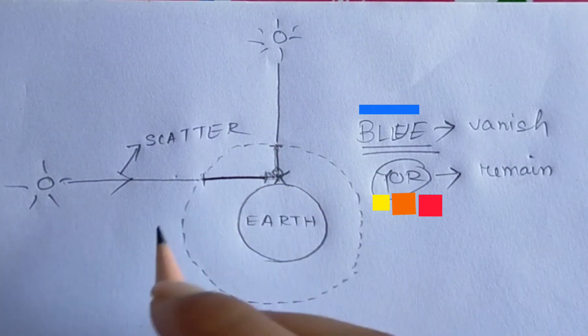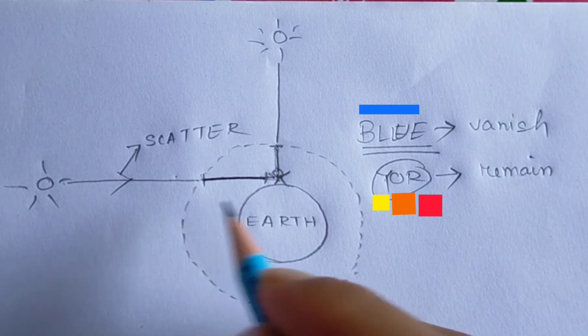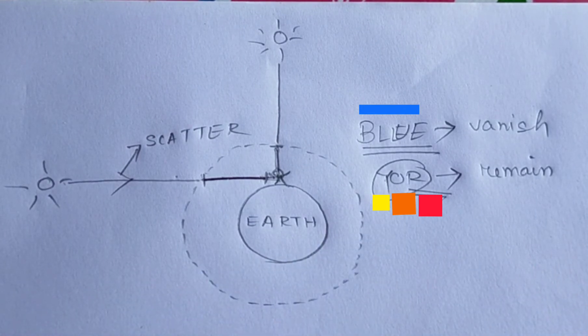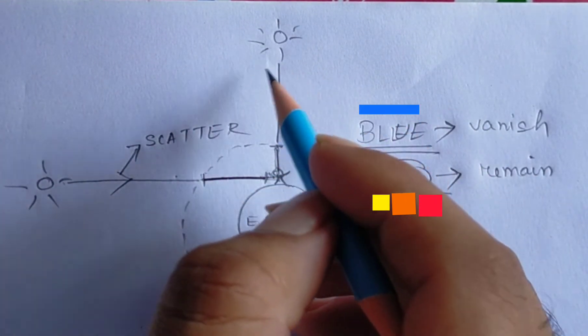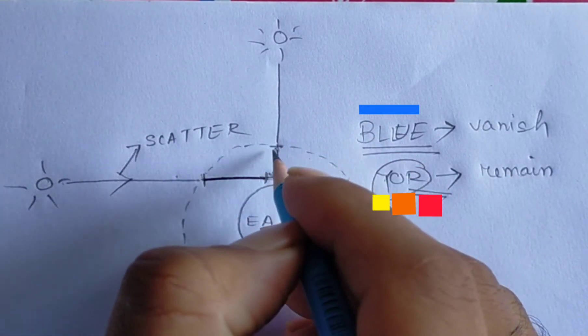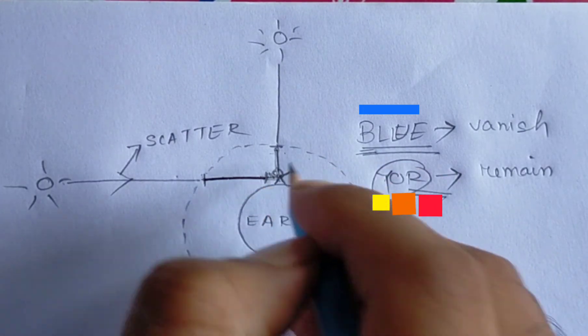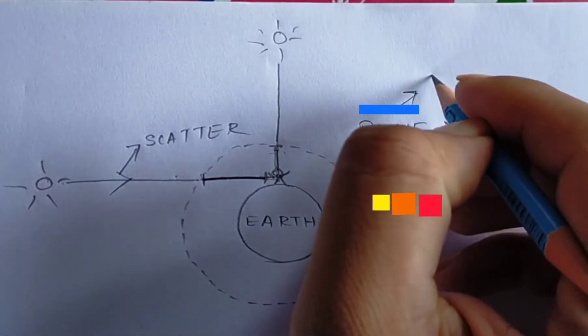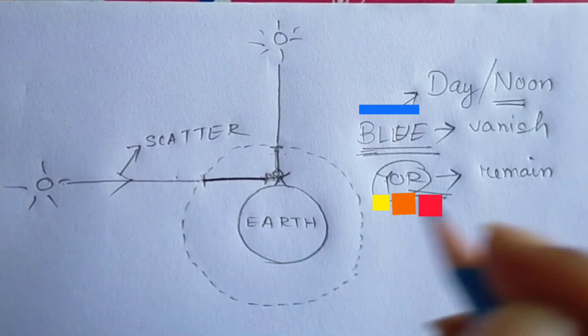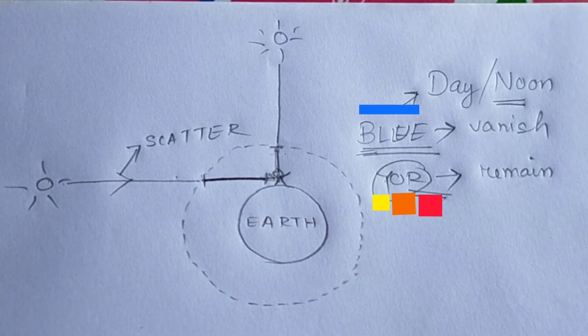So when we see the sun in the morning, the sun appears or the sky appears red. During the noon time, light travels a shorter distance, and the blue light scatters. By the daytime or noontime, the blue light scatters, so the sky appears blue in color.